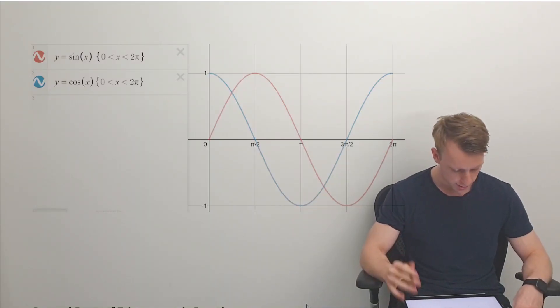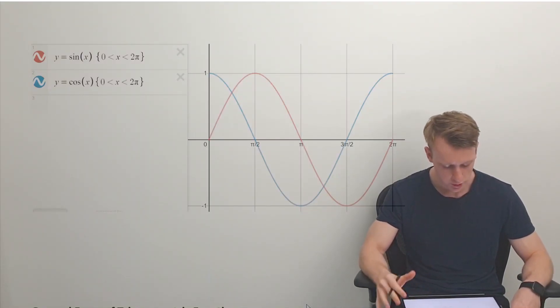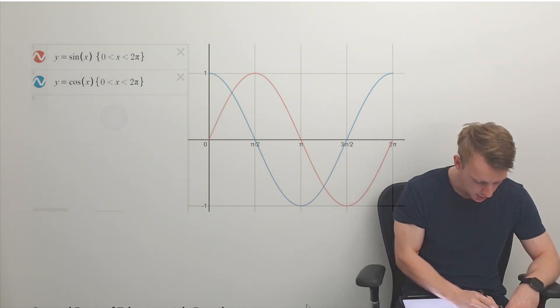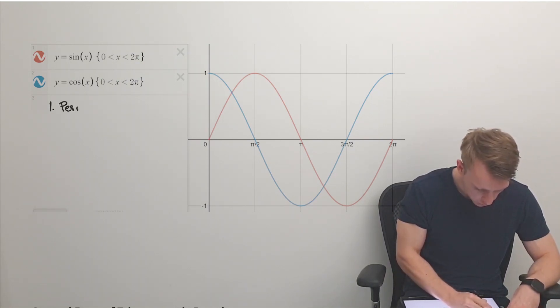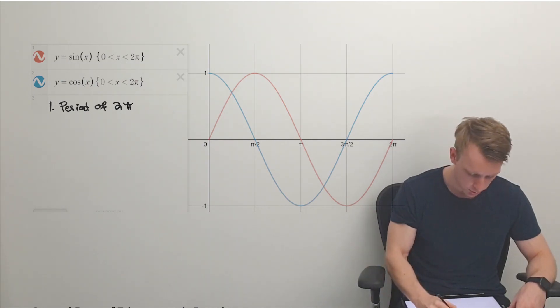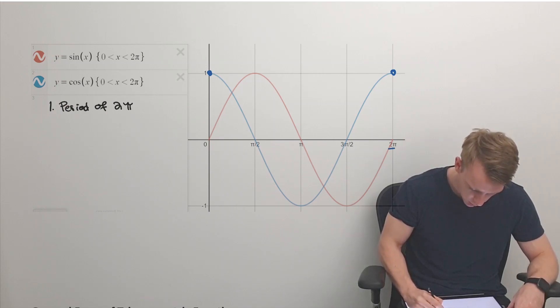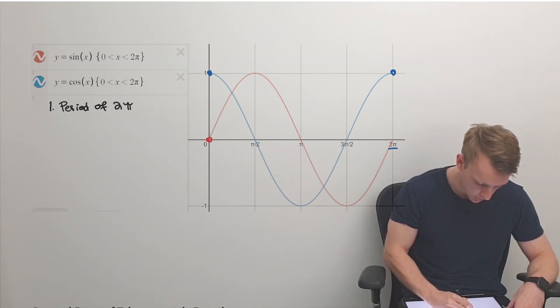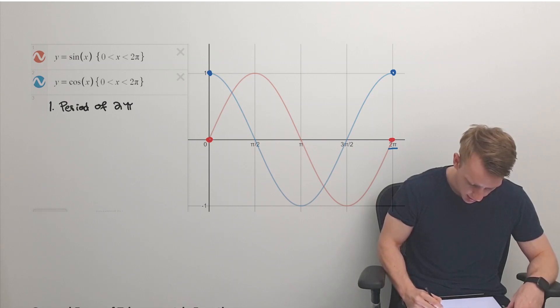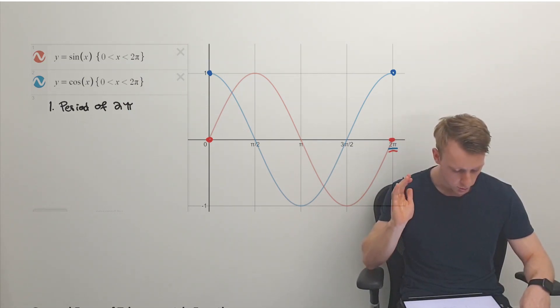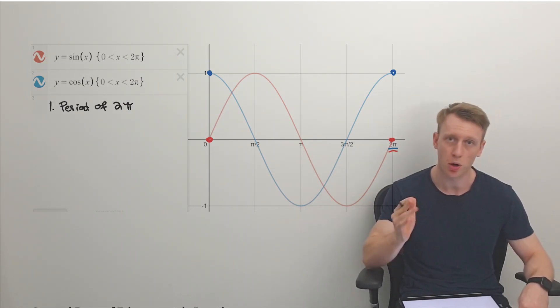As for tan of x, we're going to have a look at that graph in class. Looking at one full cycle of sine and cos of x, the first thing to note is the period of two pi — a period is one full cycle. We can see that cos starts and ends after two pi, and the same applies to sine. From start to finish of one full loop of the circle, that is called the period, and it takes two pi radians.